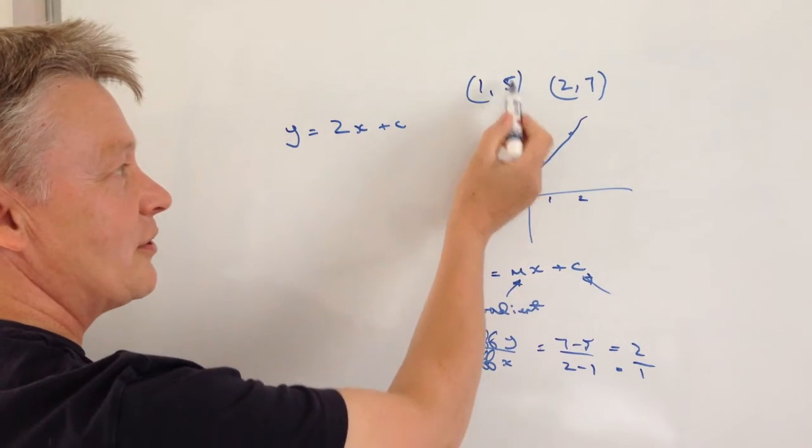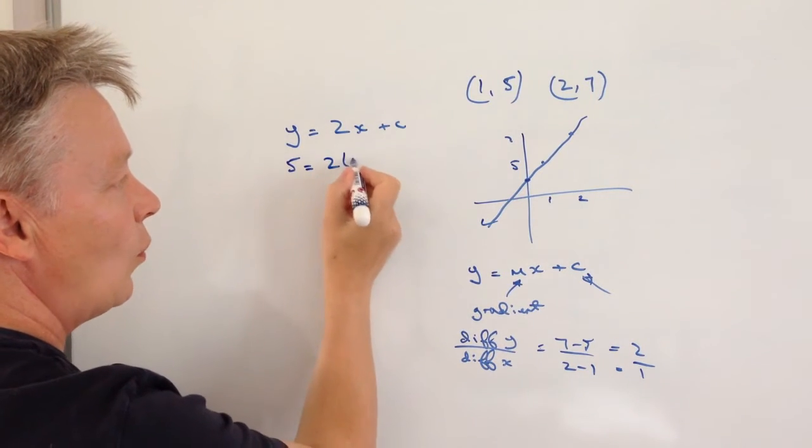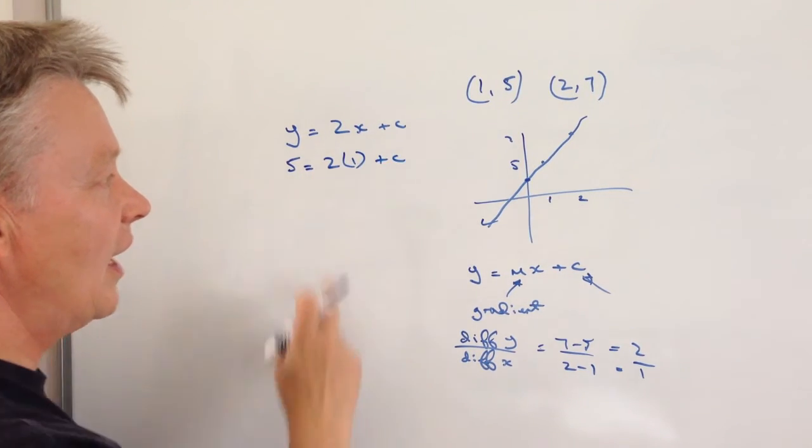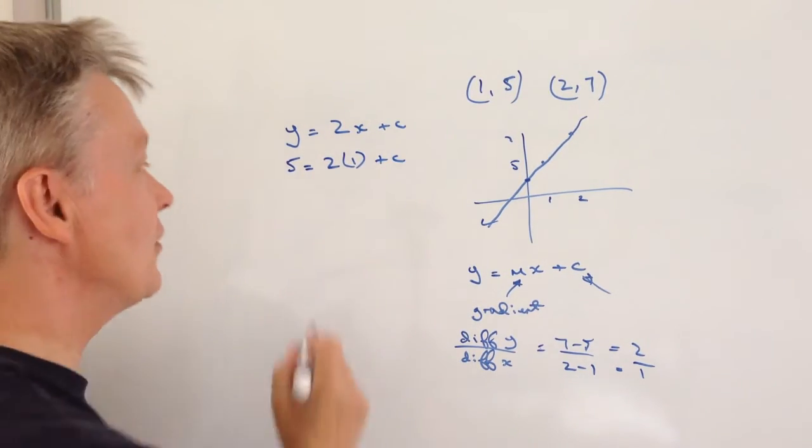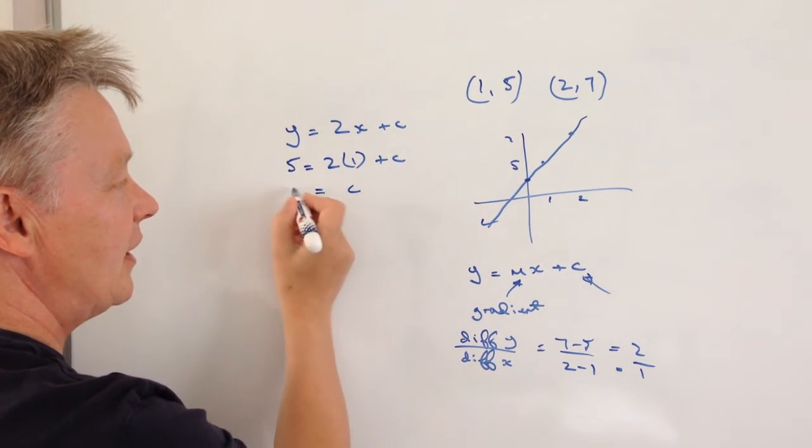So let's use the first one and I've got 5 equals 2 times 1 plus c. And if I work that out, it means that I've got 5 equals 2 plus c, so therefore c equals 3.